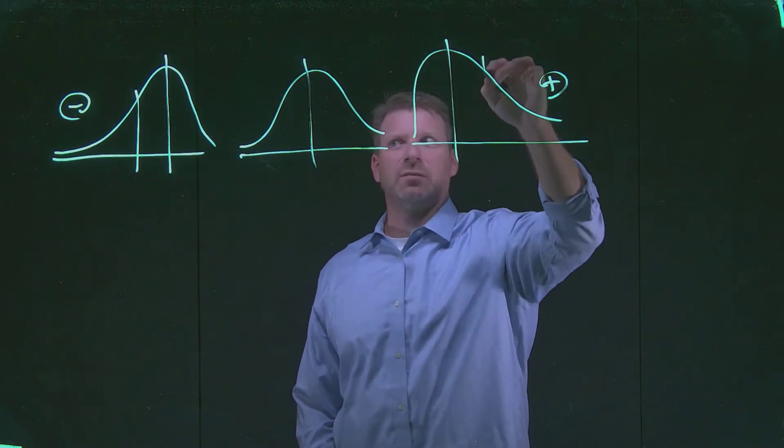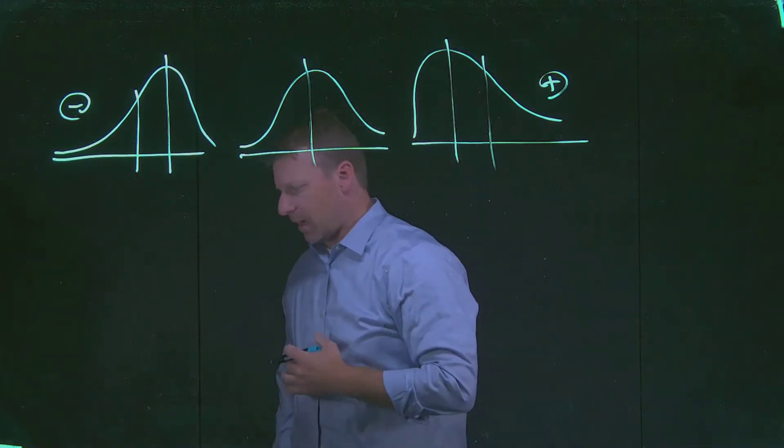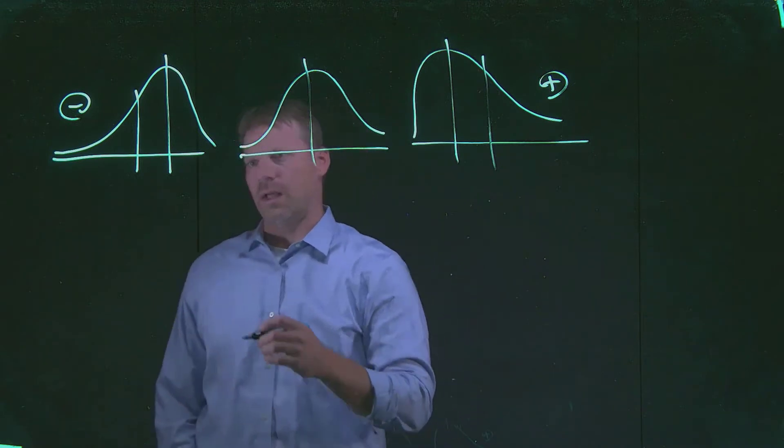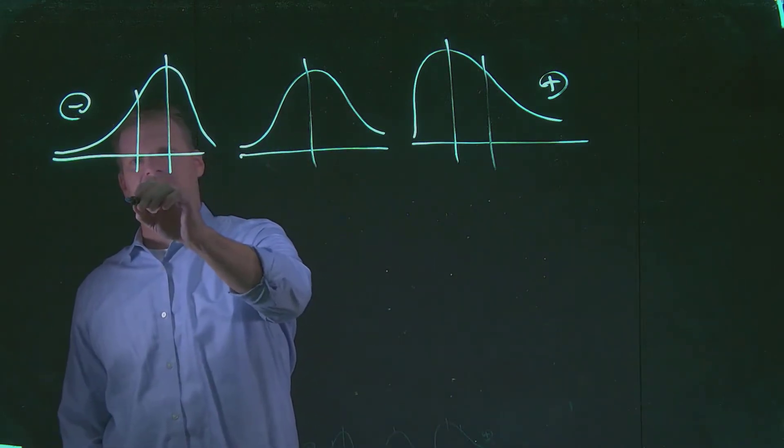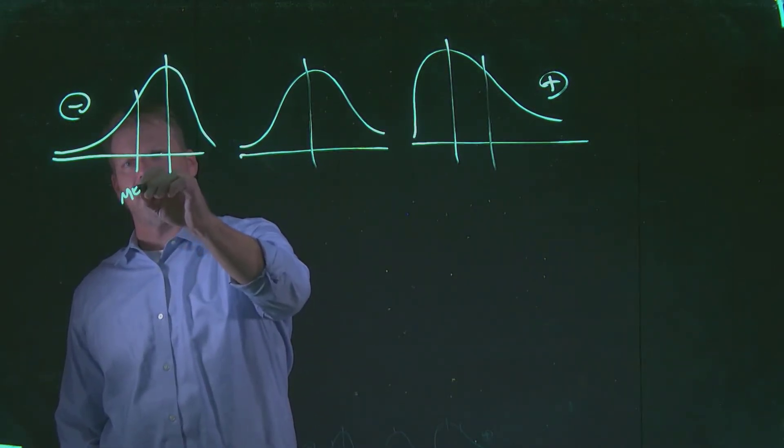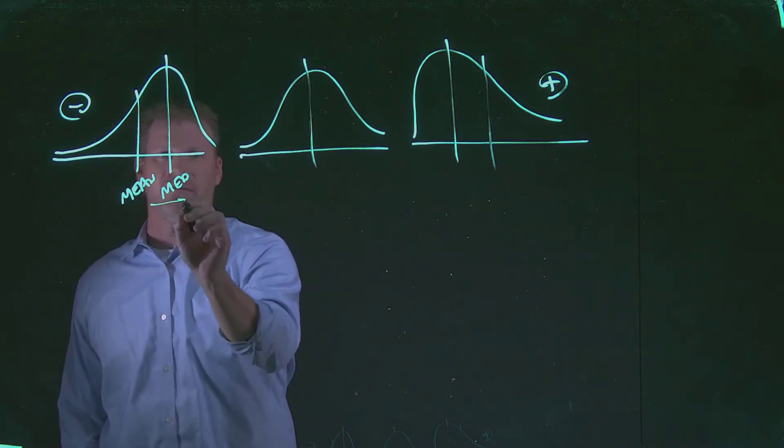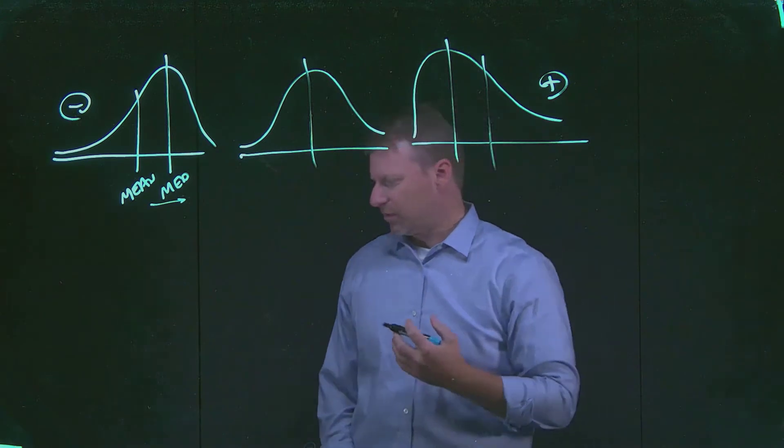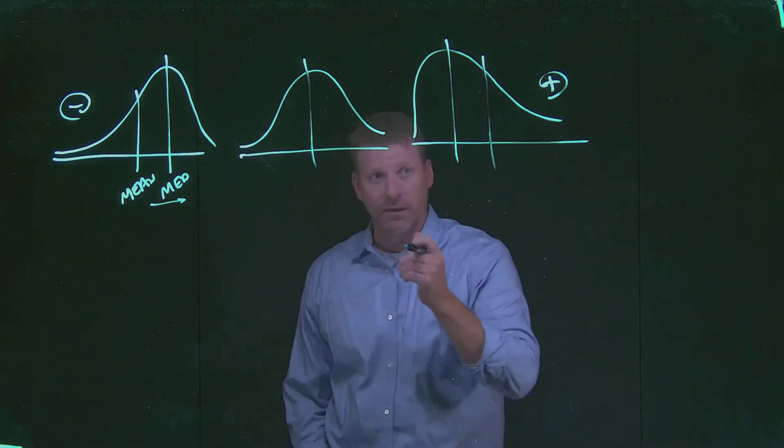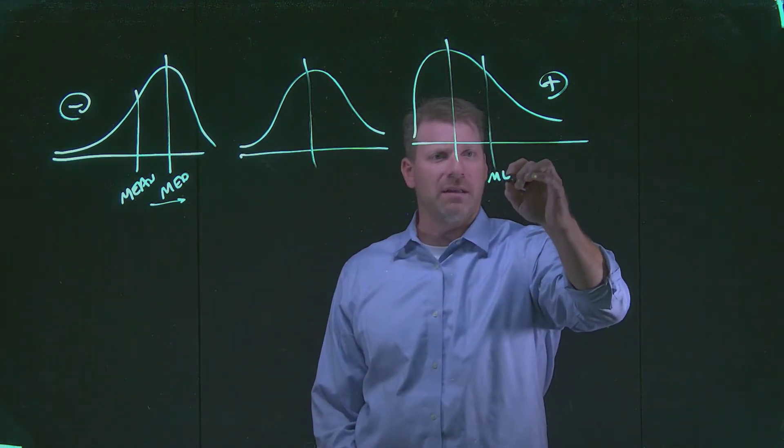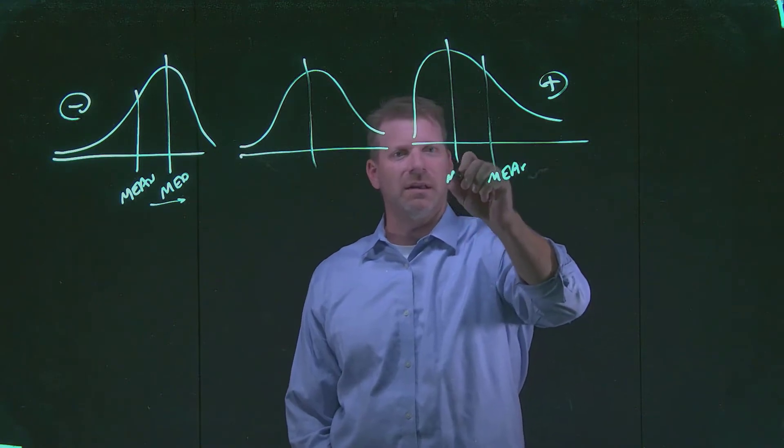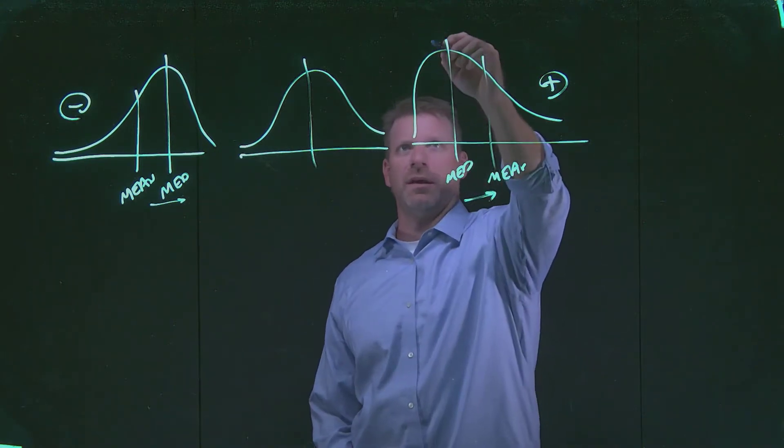Now in cases where we have skewness, our mean and median don't line up. If you imagine our mathematical center as defined by the mean is over here, and our median is shifted over. The exact opposite is true when we look at a positive distribution. We have our mean out in this direction and our median somewhere in here.